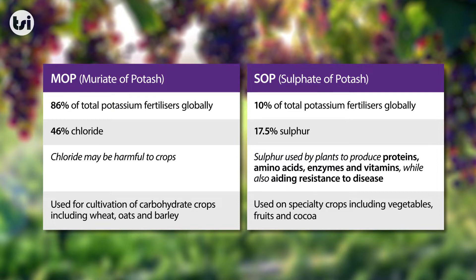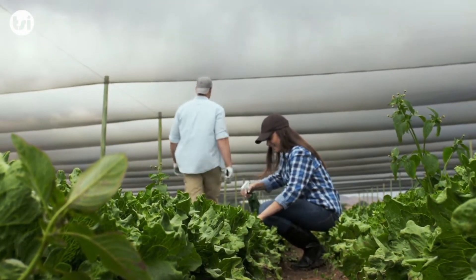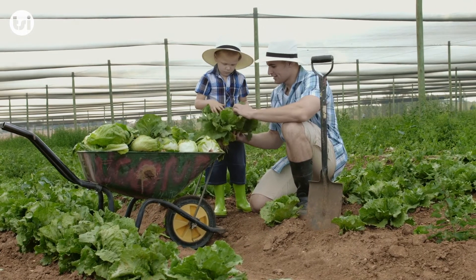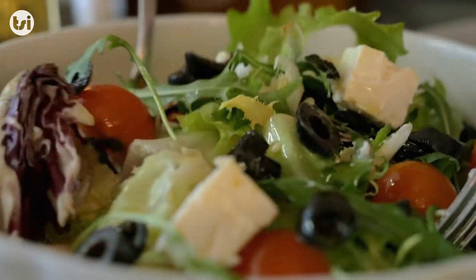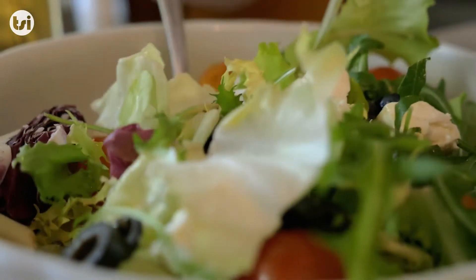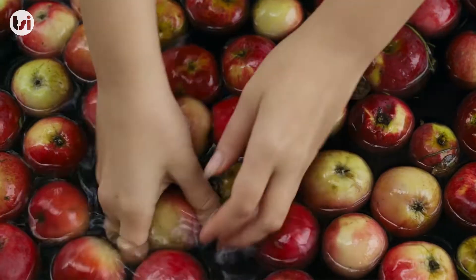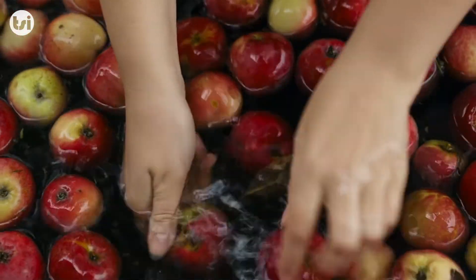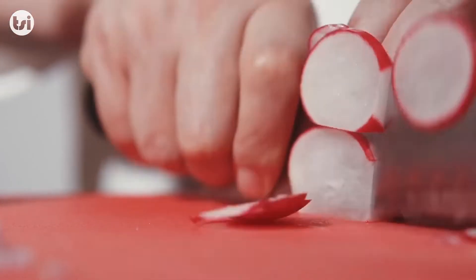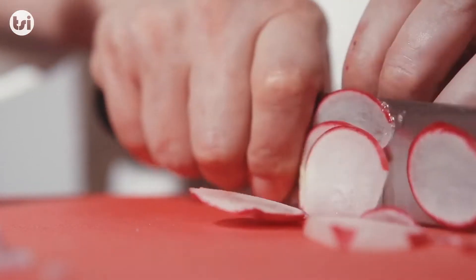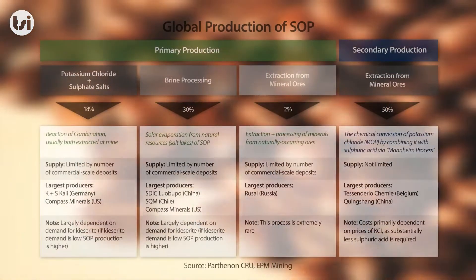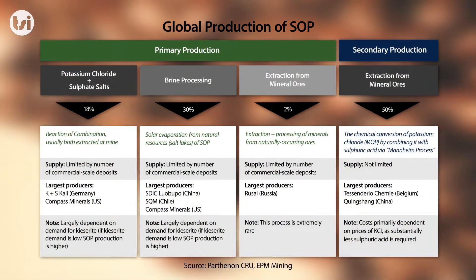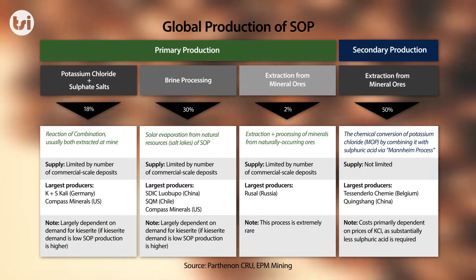And unlike MOP, SOP contains no chloride which can cause damage to certain crops. It also contains sulphur, which is a key macronutrient and ideal for use in high value chloride-sensitive crops such as fruit, vegetables, nuts and coffee. The majority of SOP is produced via two methods.